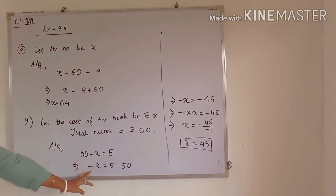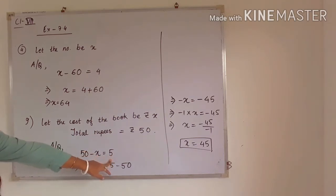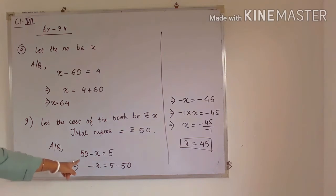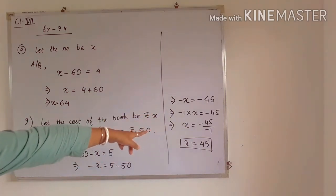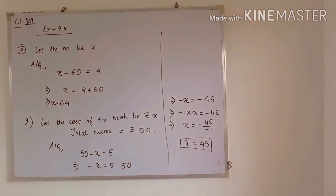The remaining rupees left with him will be rupees 5. So 50 minus x is equal to 5 will be the linear equation. If you transpose 50 to that side, it will get subtracted. So minus x is equal to minus 45. Therefore x is equal to 45, meaning the cost of the book will be rupees 45.